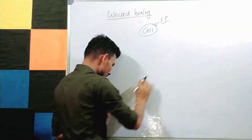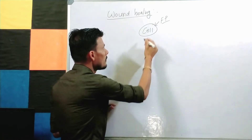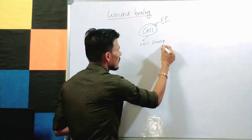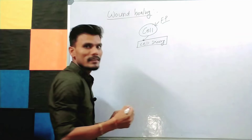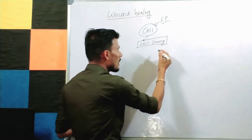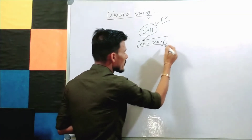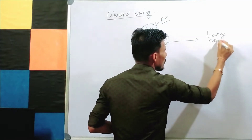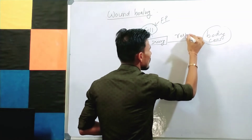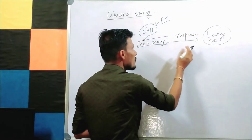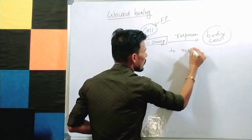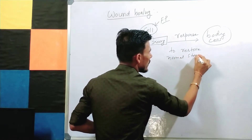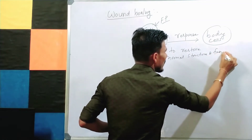We have been discussing cell injury from many previous videos. Any cell attacked by any type of etiological agent may lead to cell injury. When there is cell injury and the cell has been damaged, our body cells and other tissues will show a response to cell injury to restore normal structure and function.